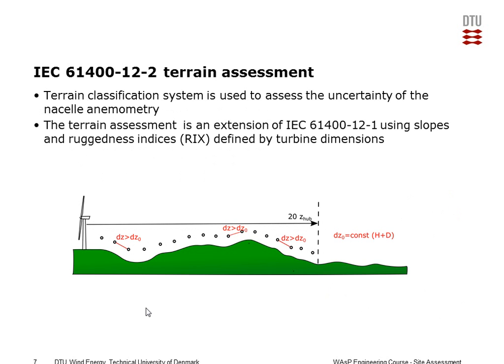The terrain assessments are also done differently. You have different terrain assessments in the site assessment standard dash-12-dash-1, in the main power performance measurements standard dash-12-dash-1, and in this new dash-12-dash-2. It's all quite different, so you should check in the standards to be sure you know the rules. They always first do a dash-12-dash-1 site assessment, and on top of that they do something additional involving what is called the RIGS number, similar to what is known from WASP.